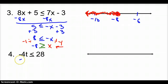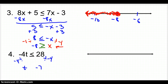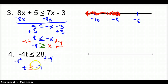For number 4, to get the negative 4 away from t we divide by negative 4. Since we divide by a negative, we flip the inequality. So t is greater than or equal to negative 7.